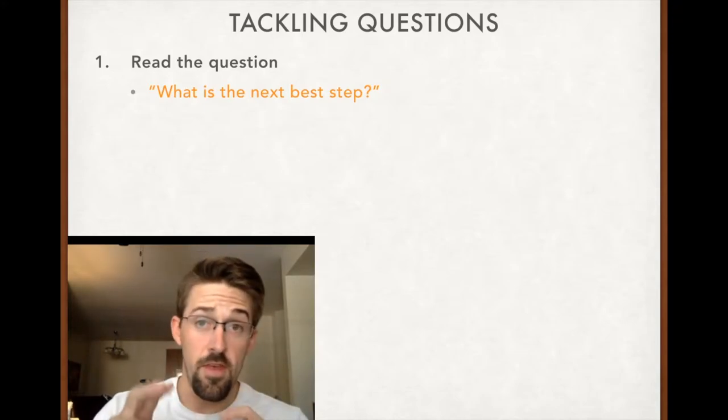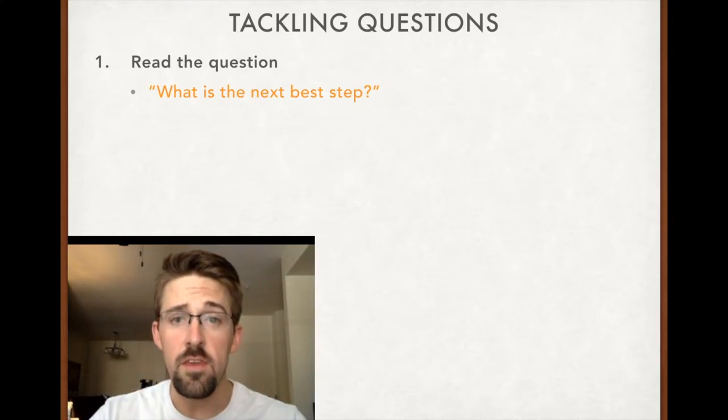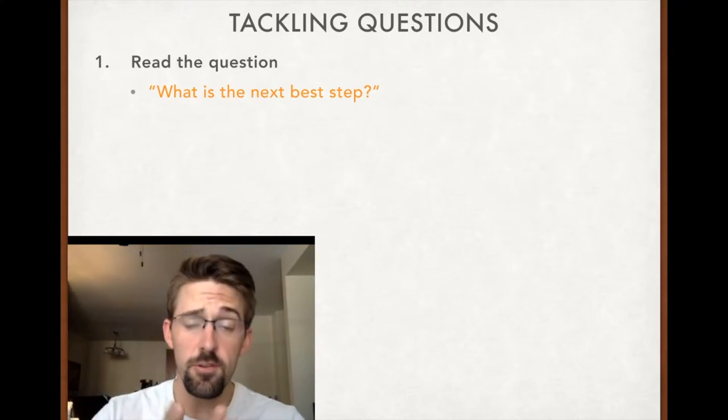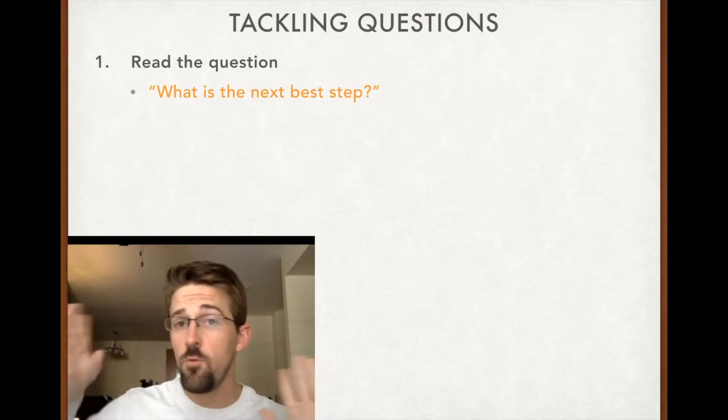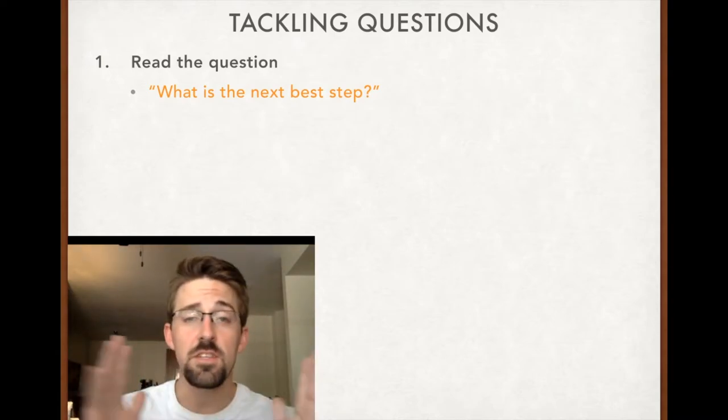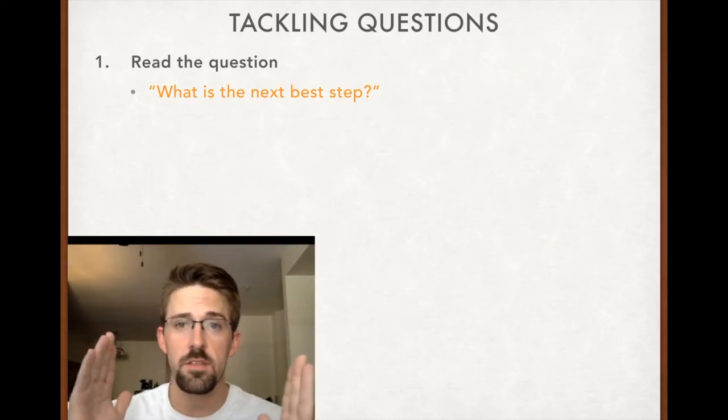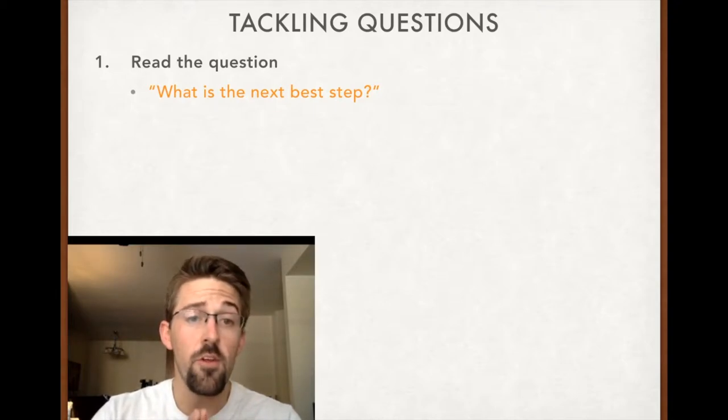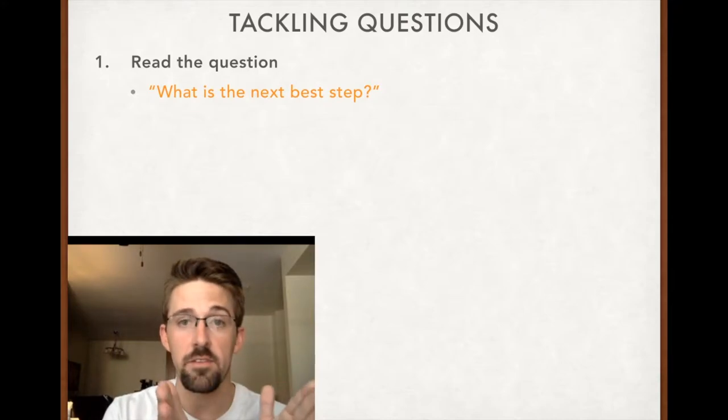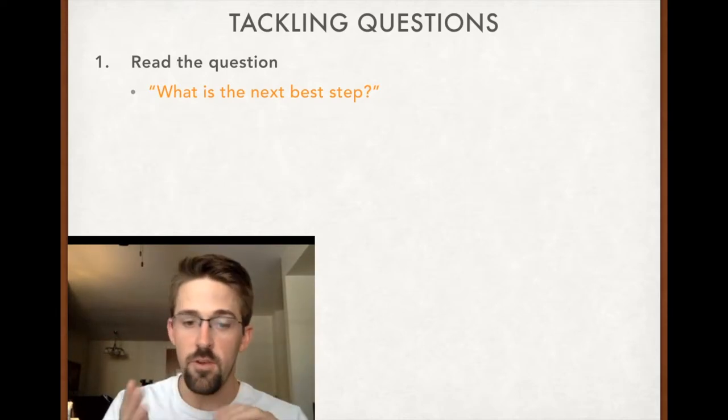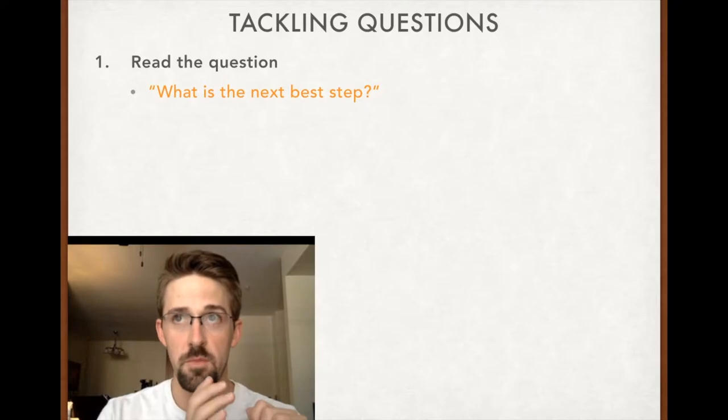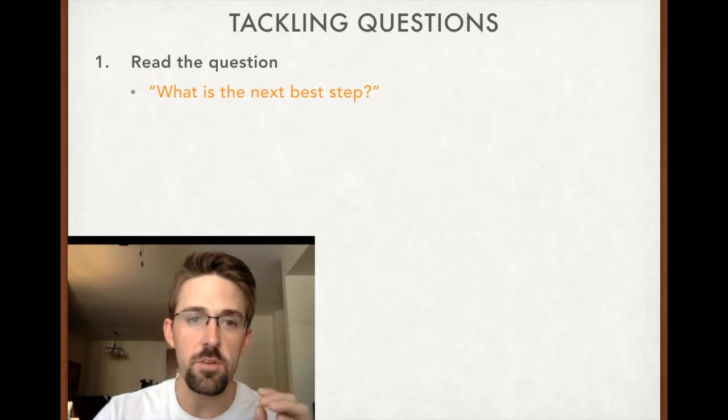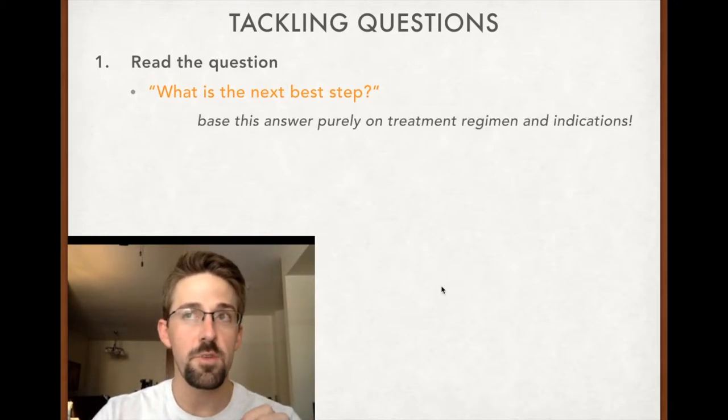What this is asking is, remember on that previous page, treatment is one of the fingerlings of each disease. They are literally asking step 1, 2, 3, 4, whatever, of each disease process, where are we in the treatment process? A lot of the times they'll tell you, hey, we tried step 1, this patient didn't respond. So all they're asking is, what's the next line of treatment? What's step number 2? Once you've got your diagnosis and you've figured out that we've tried step number 1 for treatment previously, step number 2 is all they're asking you. There's no subjectivity here needed whatsoever. So base this purely on treatment regimen and indications.